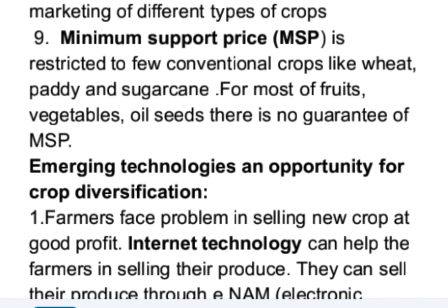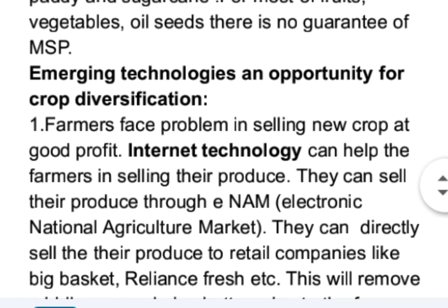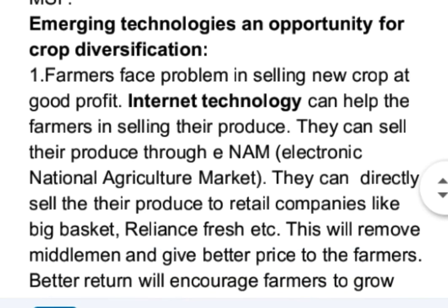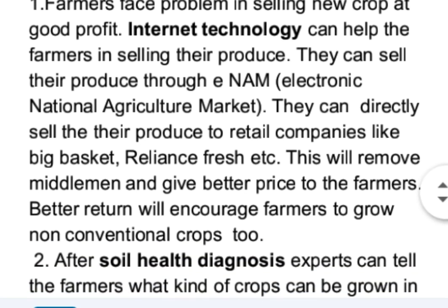Next is emerging technologies and opportunities for crop diversification — how can new technologies help? Farmers face problems in selling new crops at good profit. Internet technology can help farmers sell their produce through eNAM, the Electronic National Agriculture Market. They can also directly sell to retail companies like Big Basket, Reliance Fresh, etc. This removes middlemen, gives better prices to farmers, and encourages them to grow non-conventional crops.